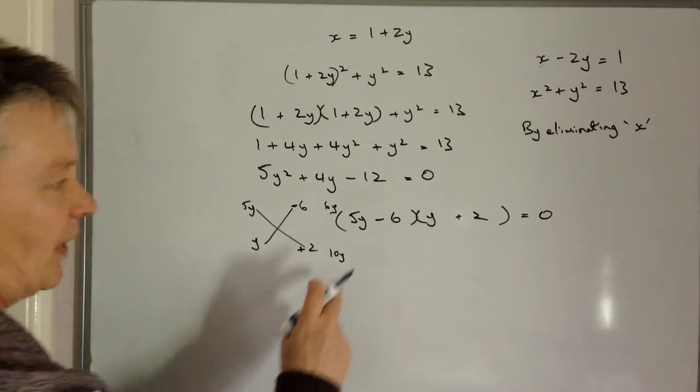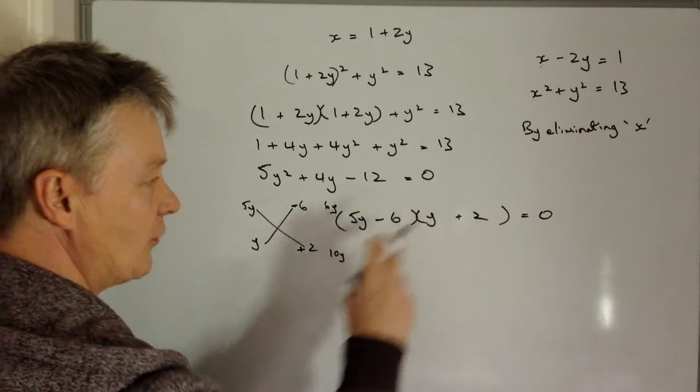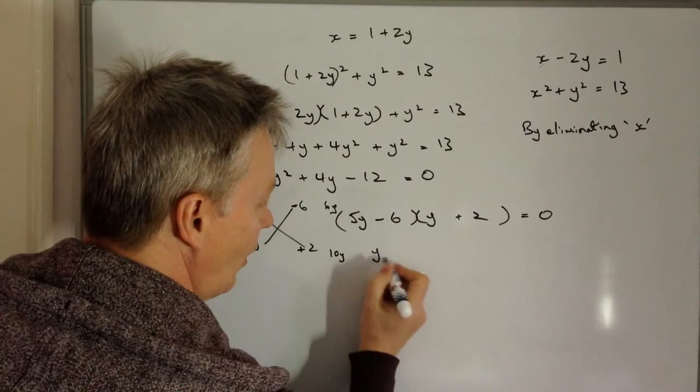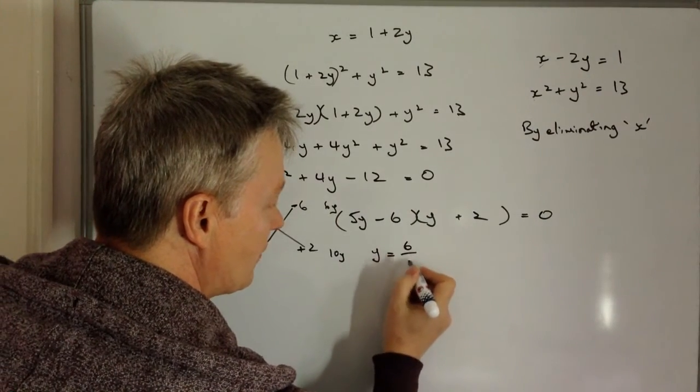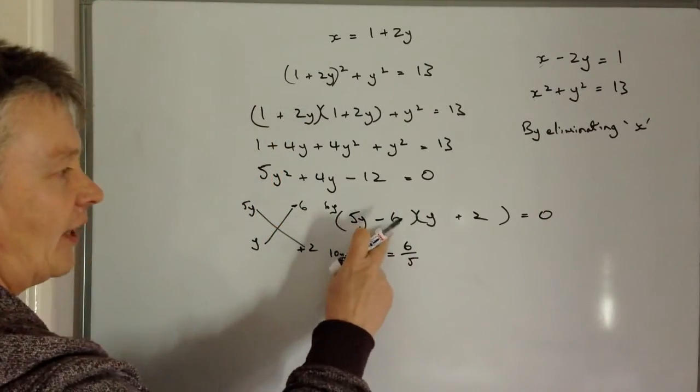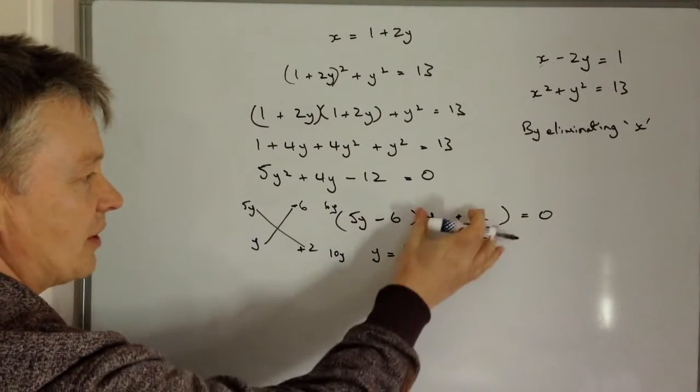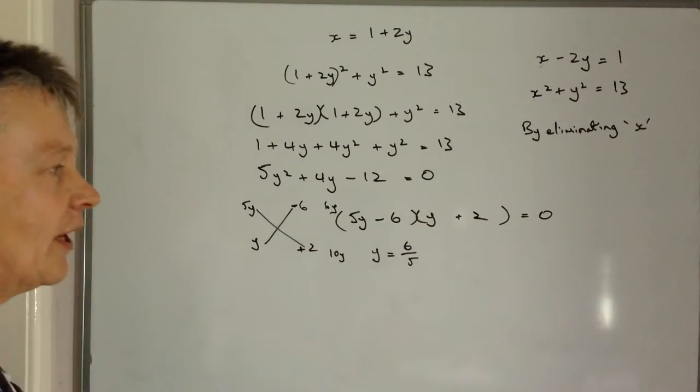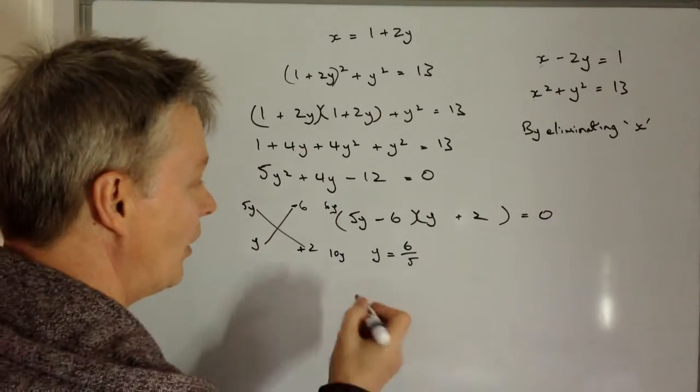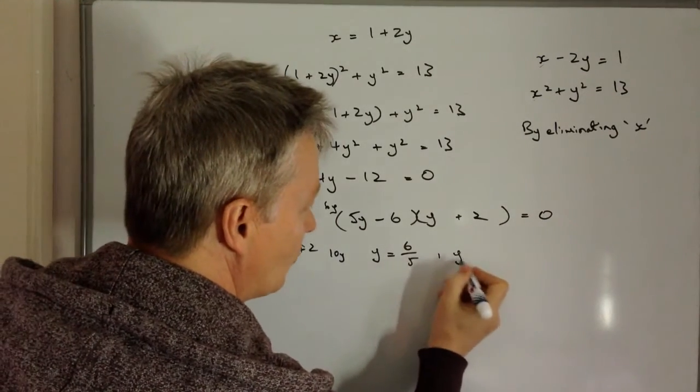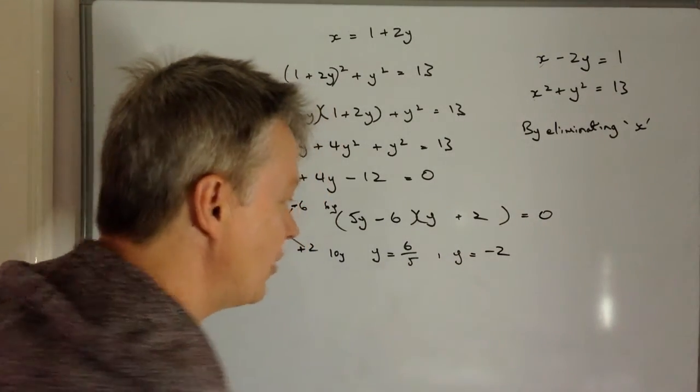Now, if I then look at the values of Y in this case, I've got Y equals positive 6 over 5. So if I add 6 to both sides, I've got 5Y equals 6. So Y equals 6 over 5 and Y equals minus 2.